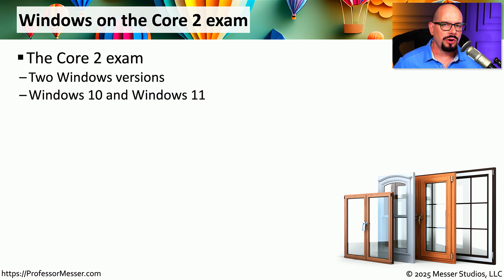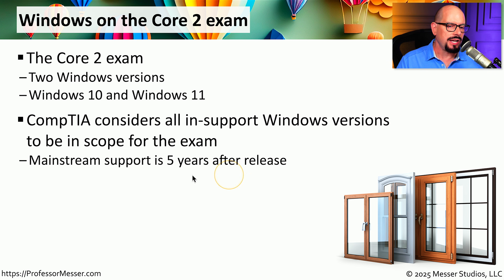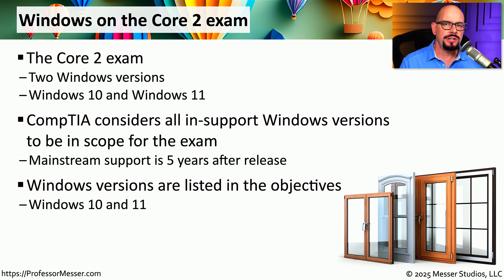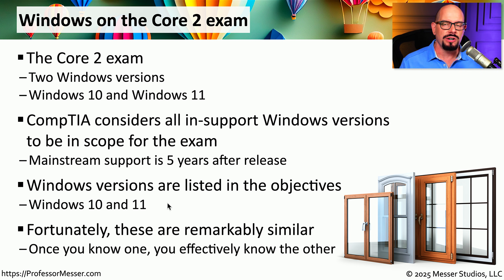For your Core 2 exam, there are two versions of Microsoft Windows you need to be familiar with: Windows 10 and Windows 11. CompTIA's official exam objectives state that all in-support Windows versions are in scope for the exam, and CompTIA has specifically written that you need to know both Windows 10 and Windows 11. Fortunately, both versions are very similar, so once you know Windows 10, you're already very familiar with Windows 11.